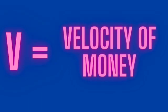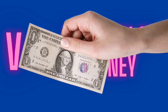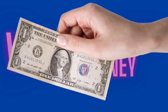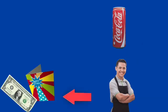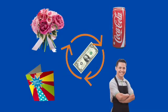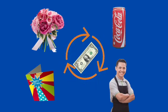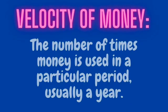V is the velocity of money, and the best way to understand it is to think of a single dollar bill traveling through the economy. It may start with you; you use it to buy a can of coke. The store owner uses it to pay an employee. The employee uses it to buy a birthday card. The card shop owner then uses it to buy flowers, and so on. The velocity of money is simply the number of times money is used in a particular period, usually a year.